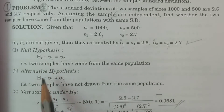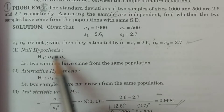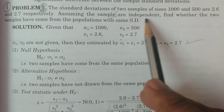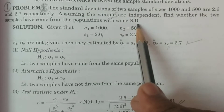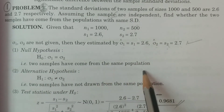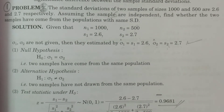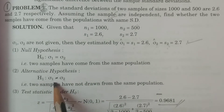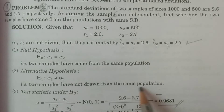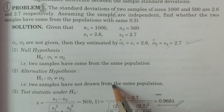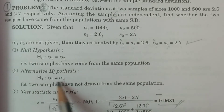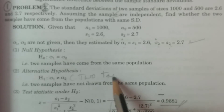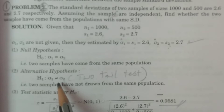Test procedure: first point, null hypothesis H0 — the two samples have come from the same population with the same standard deviation. Alternative hypothesis H1: sigma 1 is not equal to sigma 2, meaning the two samples have not been drawn from the same population. Since sigma 1 is not equal to sigma 2, this is a two-tailed test.